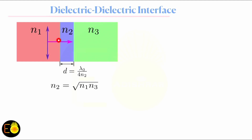However, if the incidence takes place at an angle, there will be reflection. I have simulated this structure and explained the result in my previous videos. This is one example of a dielectric-to-dielectric interface.